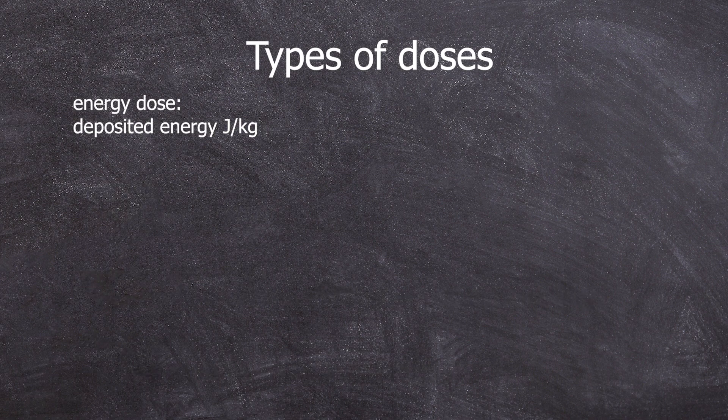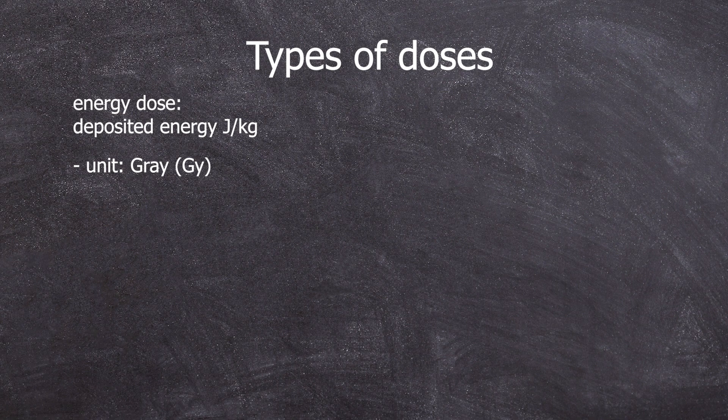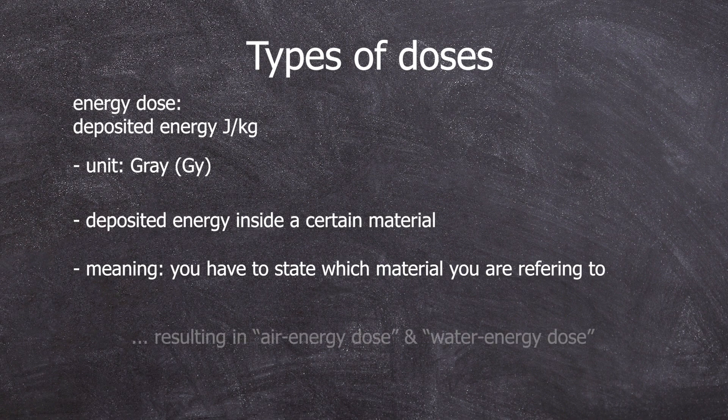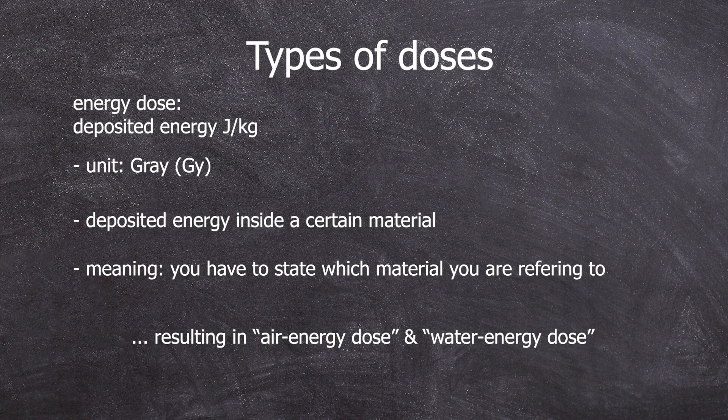Based on this, we have the energy dose. It's measured in gray and no longer describes what's emitted by the source, but rather the energy deposited inside the material. As different materials have different properties, we should also specify what material this is. This leads to terms like air energy dose or water energy dose.